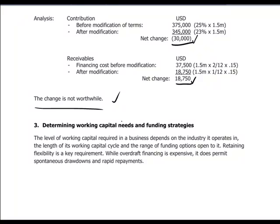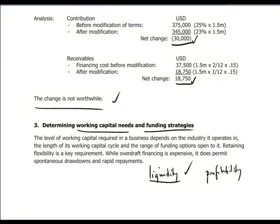Putting all this together in terms of forecasting what the working capital needs will be for a business and the appropriate funding strategy that matches that — it's a question of achieving a trade-off in having sufficient liquidity in the business, which is very important. But if we have too much liquidity, this could impair our profitability because we may not be at an optimal level in terms of inventory and extending the optimal level of credit to increase sales. So there's a trade-off between liquidity and profitability. Both are important and necessary to the proper functioning of a business, and we need to balance these two things to achieve optimality. Thank you and until next time.